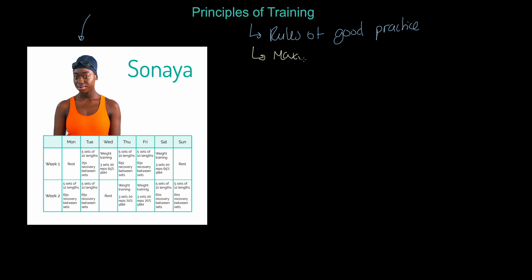We maximize adaptations — those physiological changes that happen in a person's body as a result of long-term training over time. That last statement is really important because part of what we're going to look at here is: don't overdo it. Get the moderation aspect right. So: maximize adaptations over time.